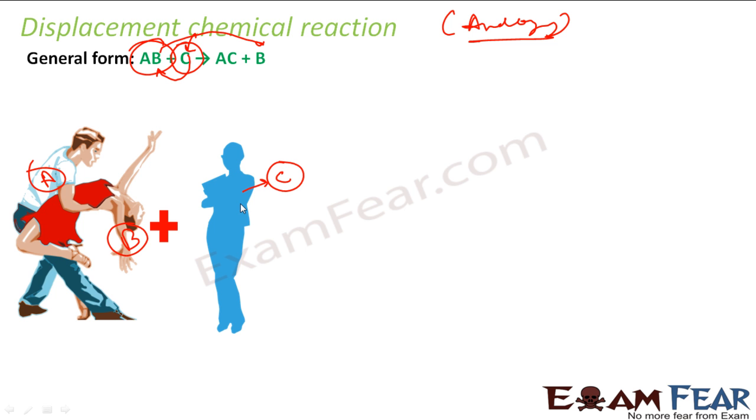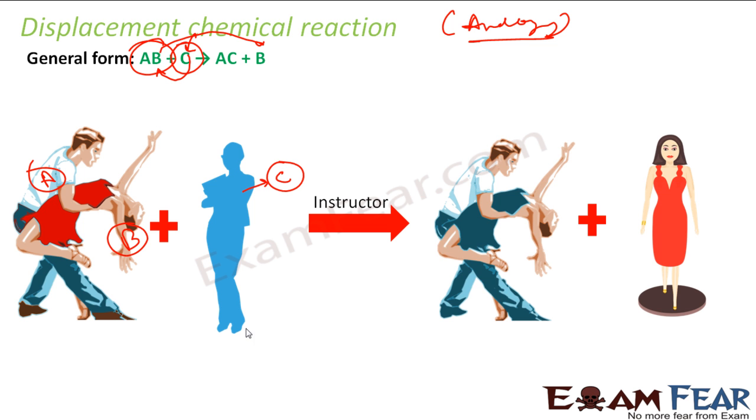So they are happily dancing, one more person C has come but nothing happens, or maybe the moment the person has come this thing got displaced, or the external factor is required. The external factor is supposed to be the instructor. The instructor says that dude this lady is wearing a red dress and you are wearing blue, it won't look good on the stage so why don't you swap.